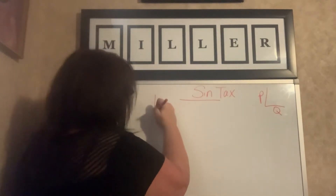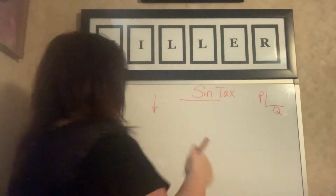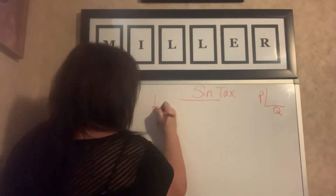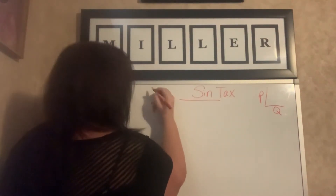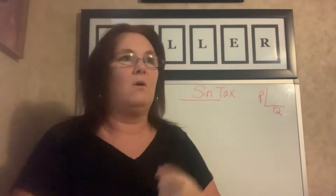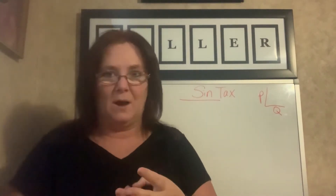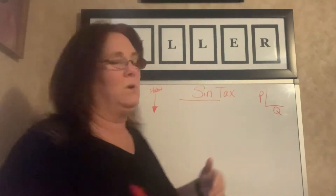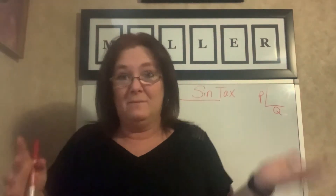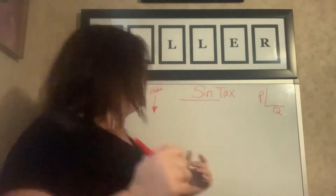They want to decrease the habit — which is what was in your professional YouTube video — we want to curb the habit. So whatever that habit is, whether it is alcohol, casinos, or cigarettes, the government says we want to decrease it. But if we decrease it too much, we're not going to get revenues. So that's where elasticity comes in.